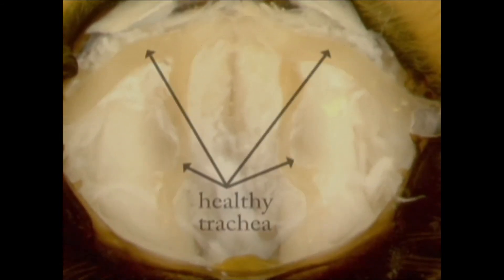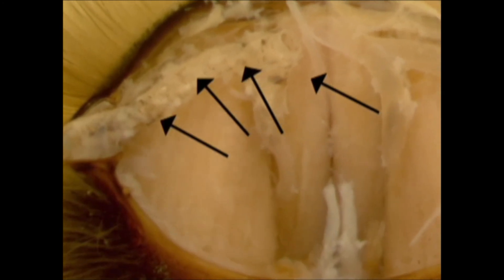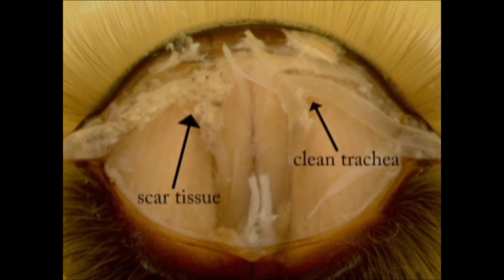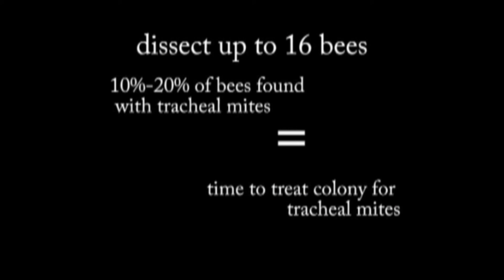The tracheal system actually looks like an upside-down letter V. Healthy trachea are transparent — you can see through them and they're creamy in color. Low to moderate infestations of tracheal mites appear as white globules present in the tracheal system. It's important to distinguish these white globs from fat bodies that are also present in the thorax. At high infestations, tracheal mites actually cause scar tissue in the tracheal system. The scar tissue looks black and can completely cover the trachea — if you see this, your bee is positive for tracheal mites. Dissect up to 16 different bees; if you find no tracheal mites in any of these samples, you have a 95% probability that you have no tracheal mites in the colony. If your bees show a 10 to 20% infestation, then you need to treat your bee colonies.